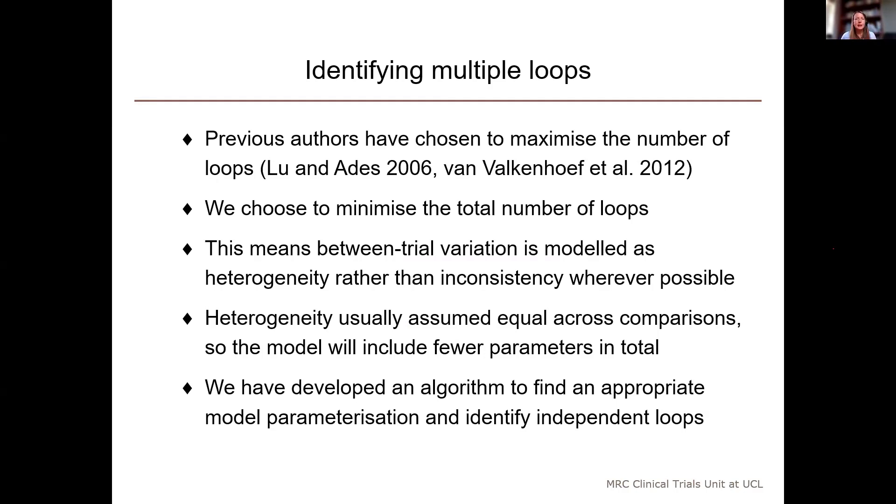So, previous authors have chosen to maximize the number of loops in the model. And that means also maximizing the number of inconsistency parameters. We've decided that we'd prefer to choose a model that minimizes the total number of loops. Minimizing the number of inconsistency parameters in the model means that variation among trials is modeled as between-trial heterogeneity as far as possible, and only modeled as inconsistency where necessary.